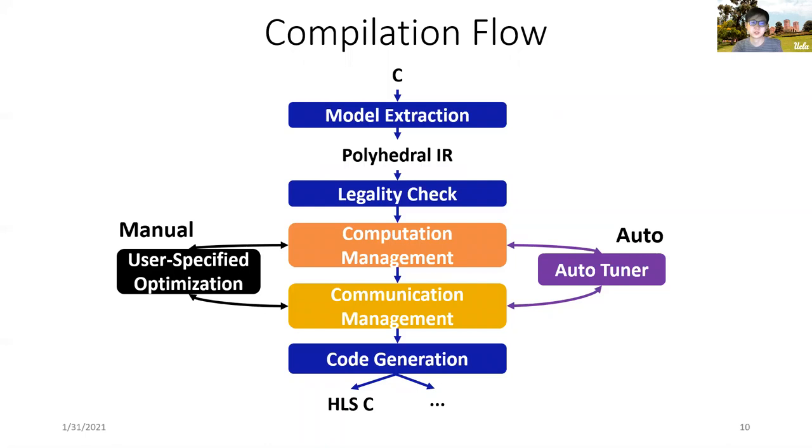The figure in the middle shows the overall compilation flow of AutoSA. AutoSA takes the input program written in C code and lowers it into the polyhedral intermediate representation. Then, using the polyhedral compilation framework, AutoSA performs a series of program transformations to transform the input program to an optimized one that describes a high-performance systolic array.